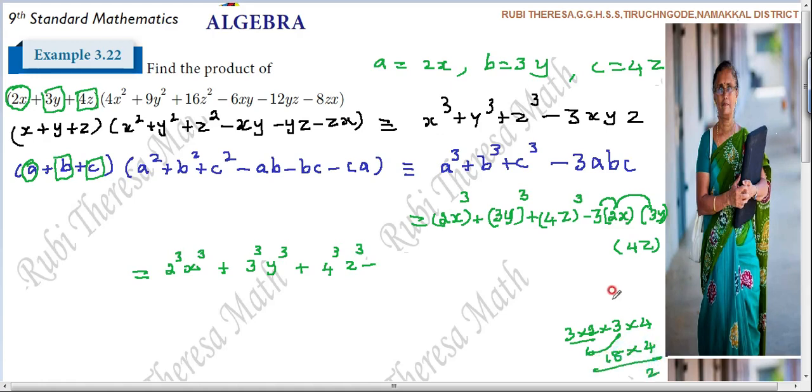8, 4s are 32. Remainder 3. 1, 4 is 4. 4 plus 3 is 7. So, 72. What is remaining here? X, Y, Z. X, Y, Z. Understand?